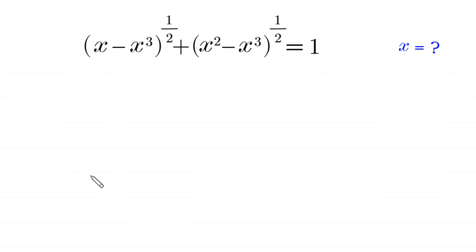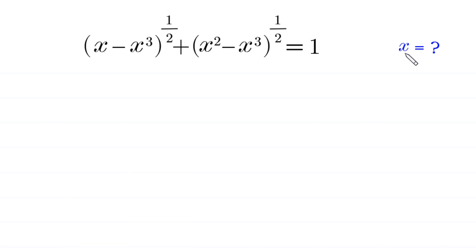Hello, welcome to how to solve this very nice algebra equation: (x minus x cubed) to the power 1/2 plus (x squared minus x cubed) to the power 1/2 is equal to 1. We need to find all possible values of x. So let us start.